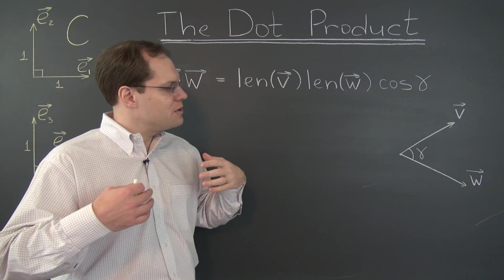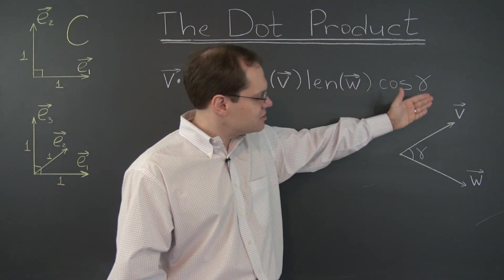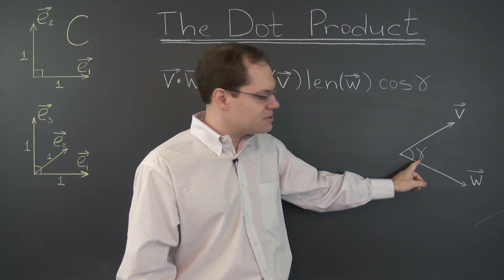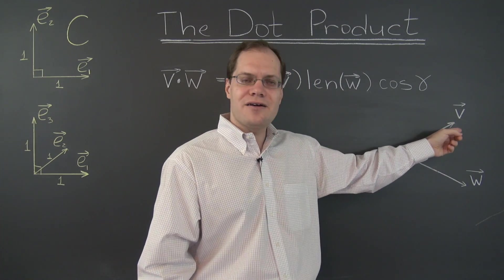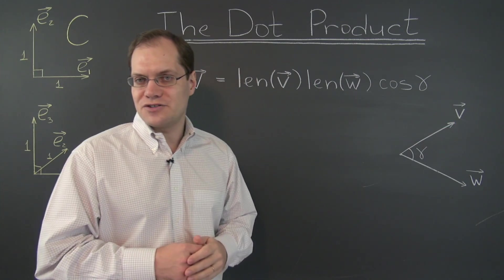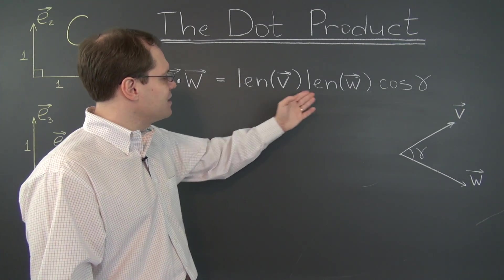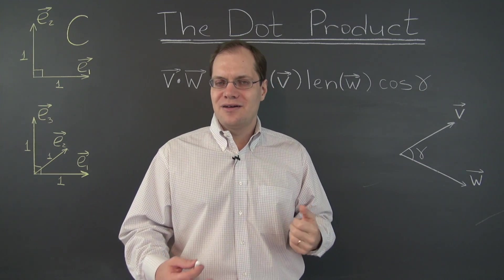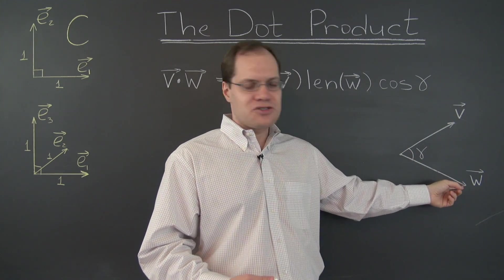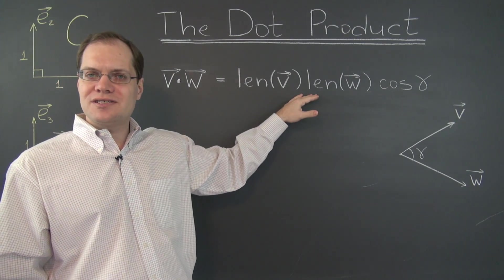It would have been much easier for me to accept if this was sine of gamma, because length of V times length of W times sine of the angle between them is related to the area of this triangle—it's exactly twice the area of the triangle. Maybe I would have been more accepting of length of V plus length of W. Maybe not a useful operation, but at least it makes geometric sense.